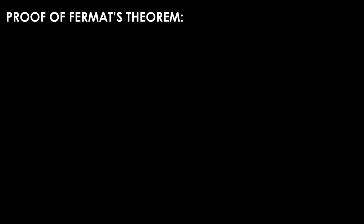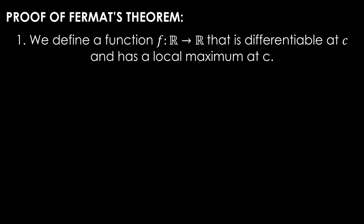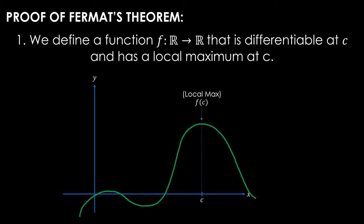We can now move on to our proof of Fermat's theorem. Our first step is that we define a function f, which is defined from reals to reals, that is differentiable at c, and has a local maximum at c. This is very similar to the intuitive example I had at the beginning of the video, so I will be putting that intuitive example here to explain throughout the proof how we can derive all of these steps.